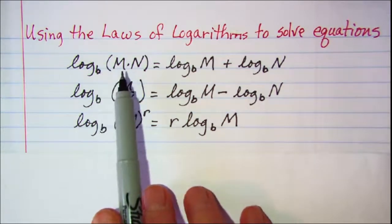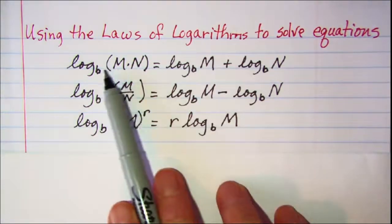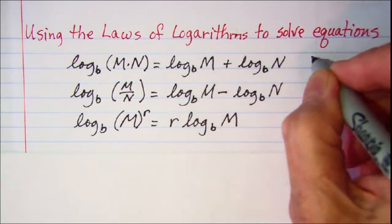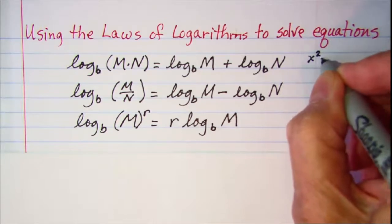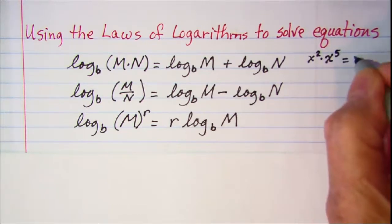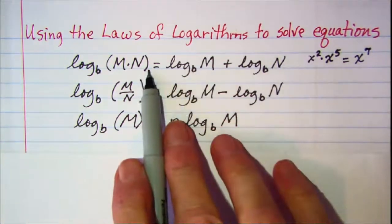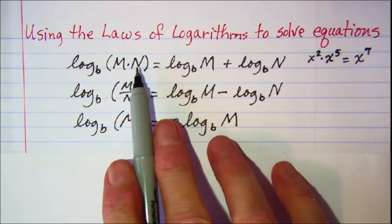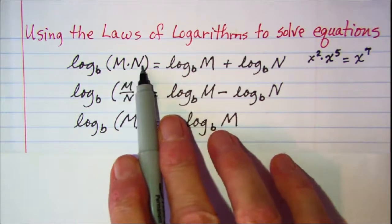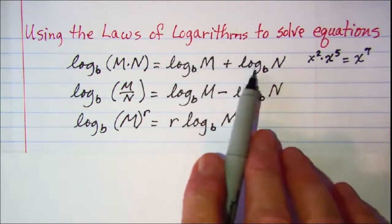Our first law of logarithms says that the log of a product is equal to the sum of the logs. This law is developed using our rules of exponents. When you have two exponentials and you're multiplying them together, you always add those exponents — so x³ times x⁴ is x to the seventh. That applies here since logarithms are just exponents. So when you're multiplying the factors in the argument, you can rewrite that as the sum of the logs of the individual factors.